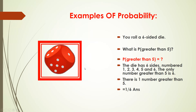Now we will see some examples to understand the probability. Suppose you roll a six-sided die. Everyone has seen the die — it has six sides: one, two, three, four, five, six.